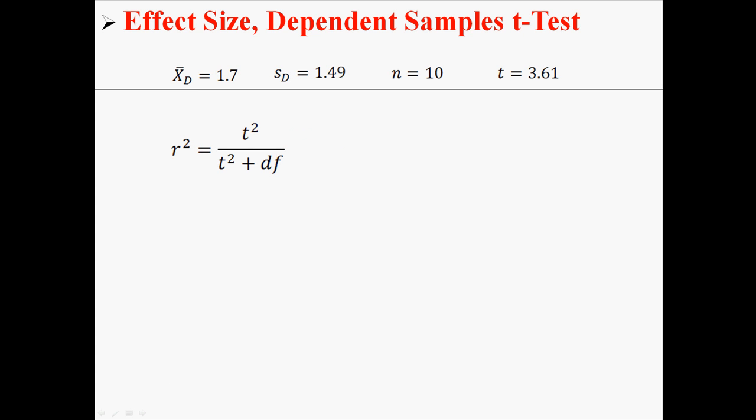Now there's also another way of calculating effect size, and that's with R squared. R squared really refers to the amount of variability that is shared between the groups. I'm not going to get into that now. Just know that R squared is another way of calculating effect size, aside from Cohen's D. And R squared is just t squared divided by t squared plus the degrees of freedom.